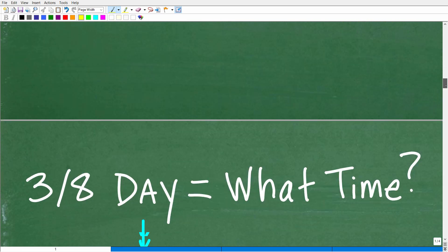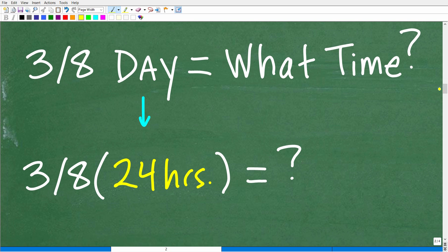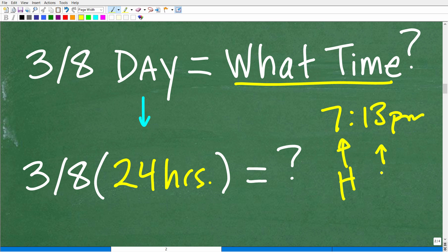Three-eighths of a day. Now I'm thinking about, how do we read time? If you ask me what time is it, I might say it's 7:13 p.m. When we talk about time, we're talking about hours and minutes. We're not talking about seconds or days. We're not gonna say it's half a day, that's what time it is. We're gonna generally describe time in hours and minutes. So three-eighths of a day, I'm gonna think of a day in terms of 24 hours. The first calculation that we need to do is we gotta figure out what is three-eighths of 24 hours. That's how much time is elapsed.